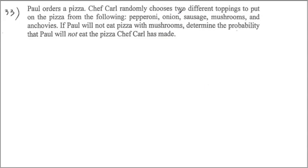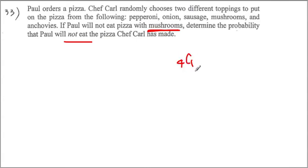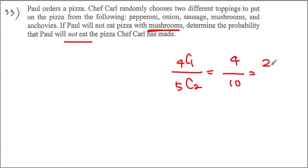Paul orders a pizza with 2 different toppings from 5 choices, so we start with 5C2. But Paul will not eat pizza with mushroom, so we look at 4 choices and choose 2, giving 4C2. To find the probability that Paul would not eat the pizza — meaning mushroom is one of the 2 toppings — we need to select 1 more topping from the remaining 4. So it's 4C1 out of 5C2, which is 4 out of 10, equal to 2/5.